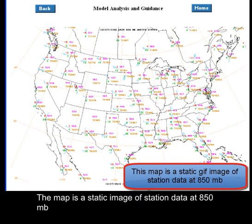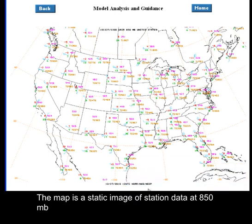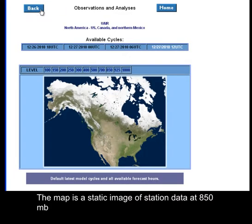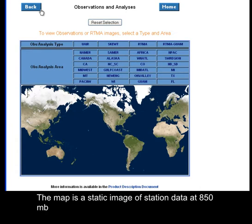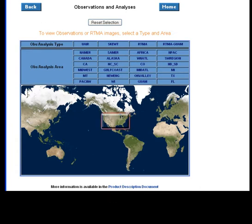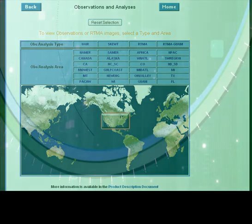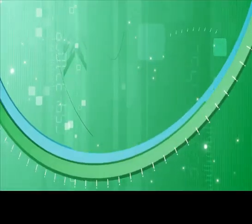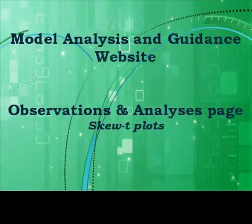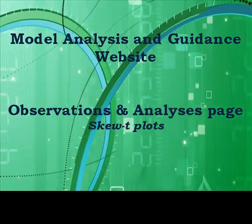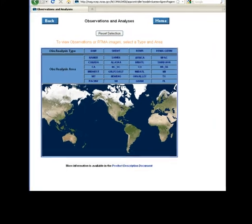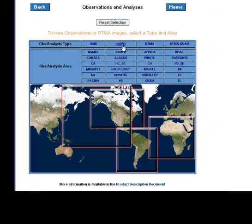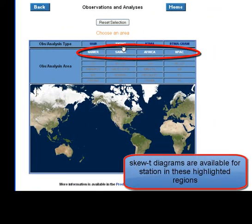The map is a static image of station data at 850 millibars.